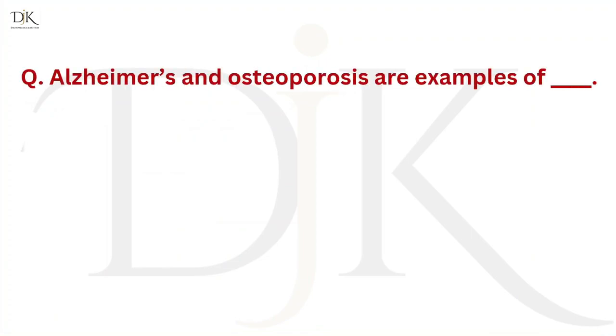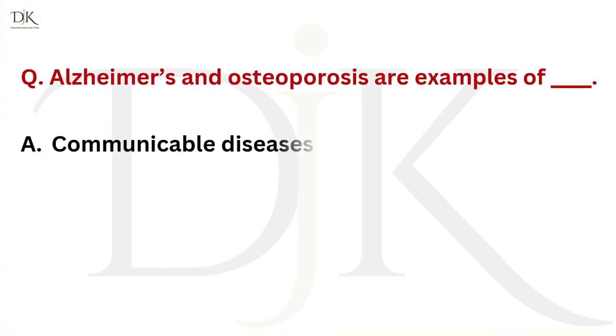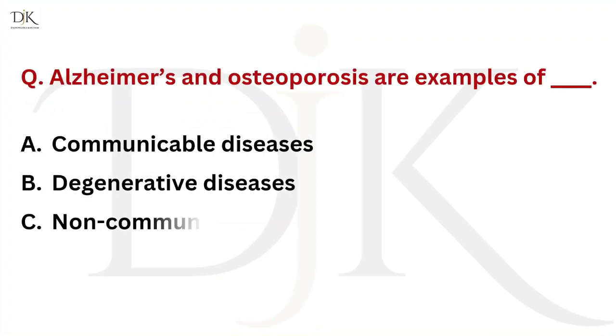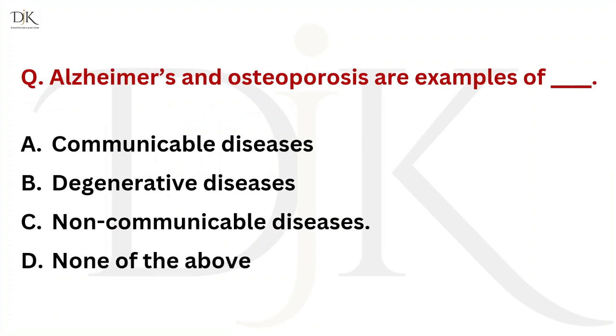Alzheimer's and Osteoporosis are examples of which category of diseases? The right answer is Degenerative diseases.